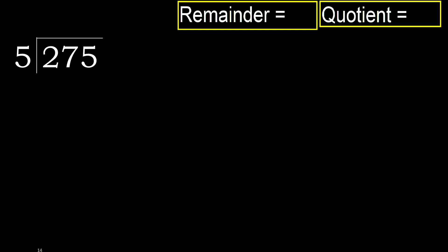275 divided by 5. 2 is less, therefore next. 27 is not less, therefore with 27.